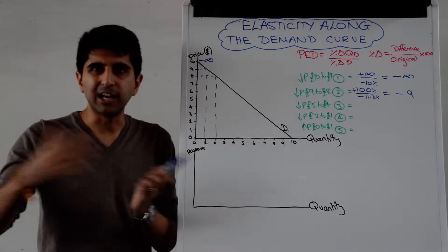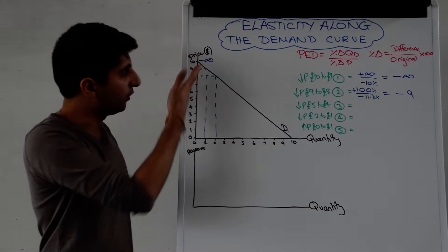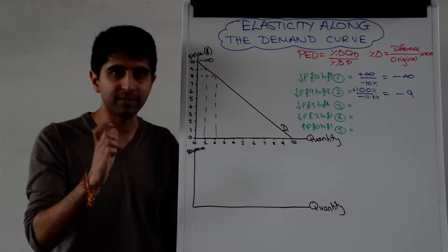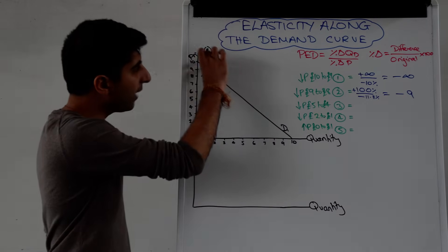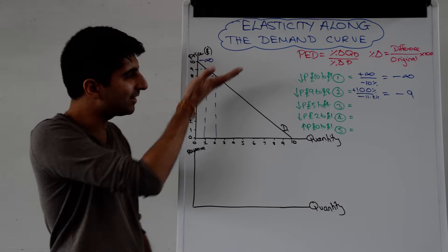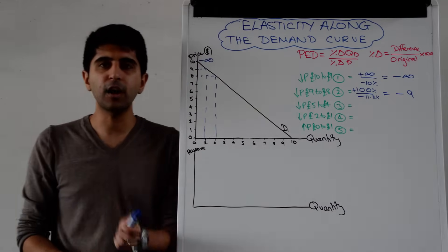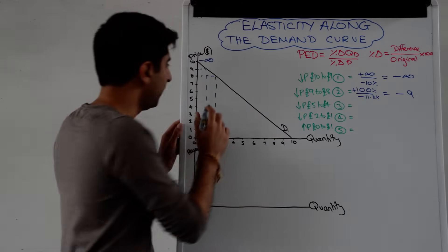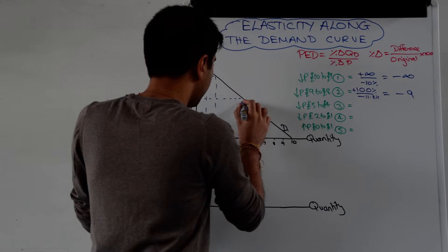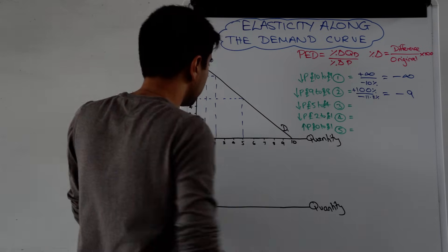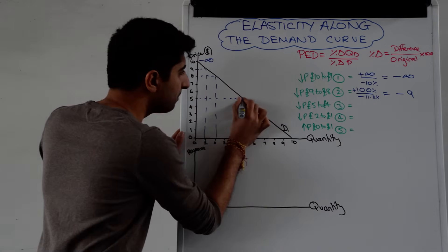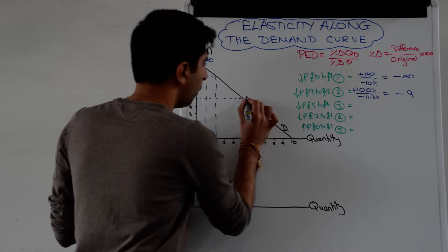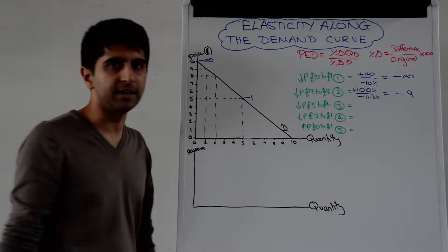If you keep going and do the same for 8 to 7, 7 to 6, you will work out that the end figures will always show price elastic demand — PED greater than 1 — on the top half of the demand curve, up until we get to the midpoint of the line. The midpoint here is at 5, taking us to a quantity of 5. That midpoint is always going to be PED of minus 1, because PED is always negative.